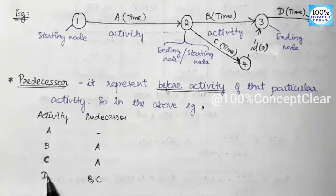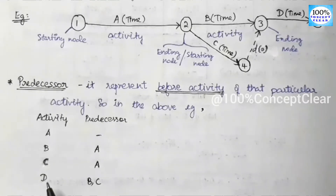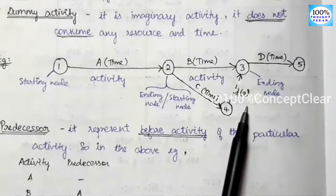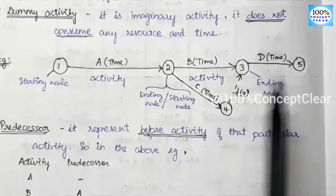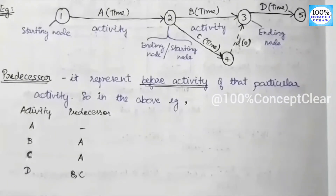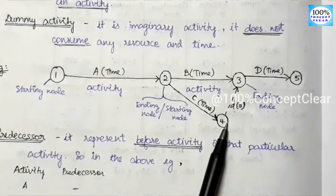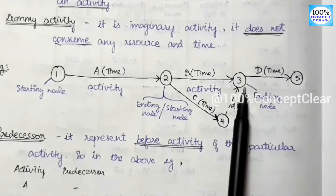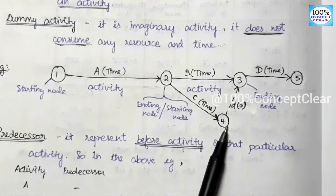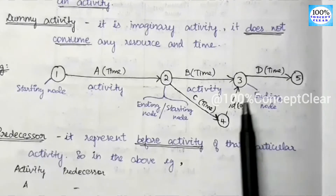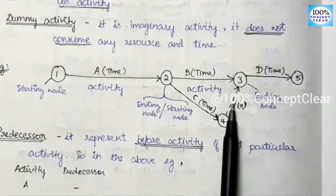When we start the D activity, we complete the sequence and order of the predecessor. B and C activities are both predecessors of D activity. B activity is complete at the third node directly. But C activity completes at the second and fourth node, so we include a dummy activity. The fourth node connects to the third node via dummy activity, so that D activity can start.